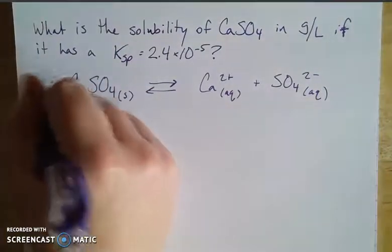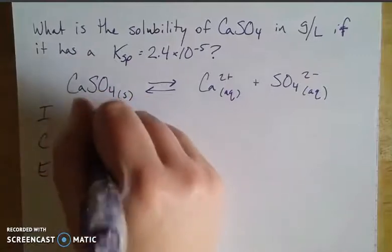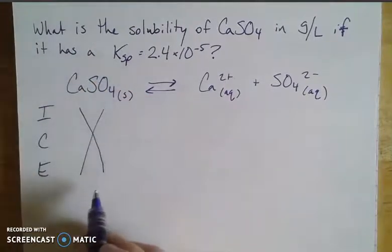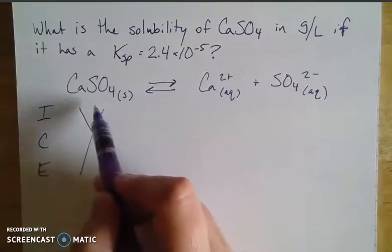So let's think icebox. We're going to disregard this whole column here in our icebox because it's a pure solid, so it's not going to be part of our equilibrium constant expression. If I throw this solid calcium sulfate into solution, initially there's going to be no ions in solution.